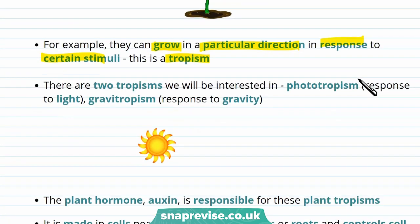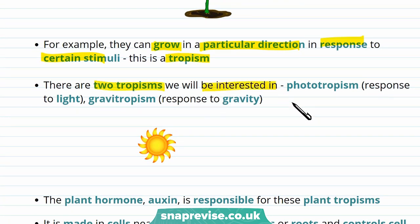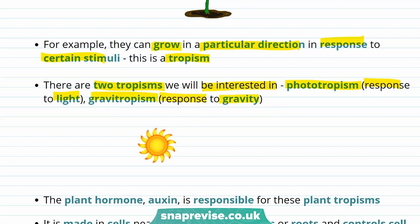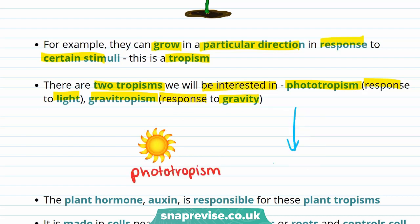There are two tropisms we're interested in. The first is phototropism, which is a response to light. The second is gravitropism, also known as geotropism, which is a response to the force of gravity.